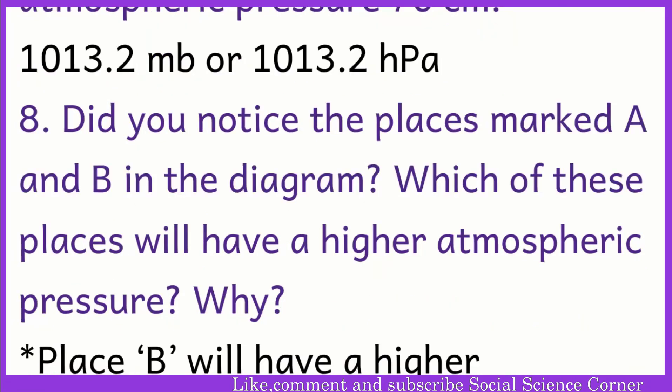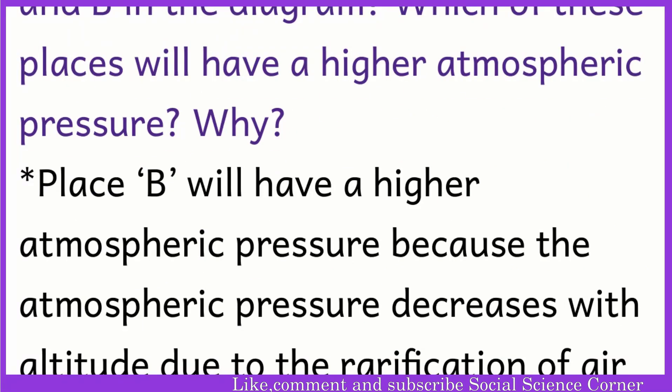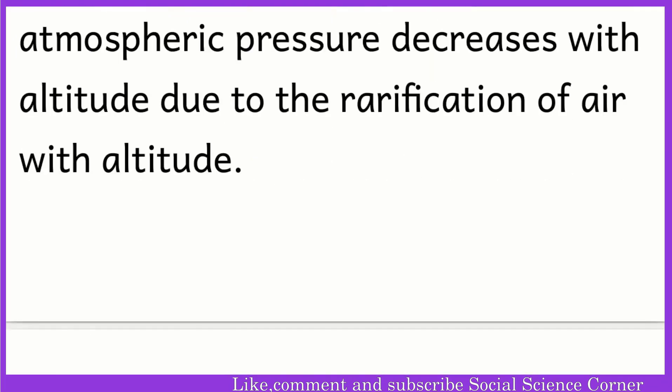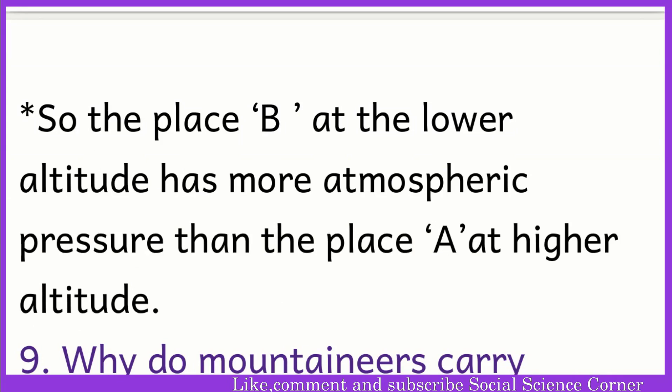In the diagram, places A and B are marked. Which of these places will have a higher atmospheric pressure, and why? Place B will have a higher atmospheric pressure because atmospheric pressure decreases with altitude due to the rarefaction of air with altitude. So the place B at the lower altitude has more atmospheric pressure than place A at higher altitude.